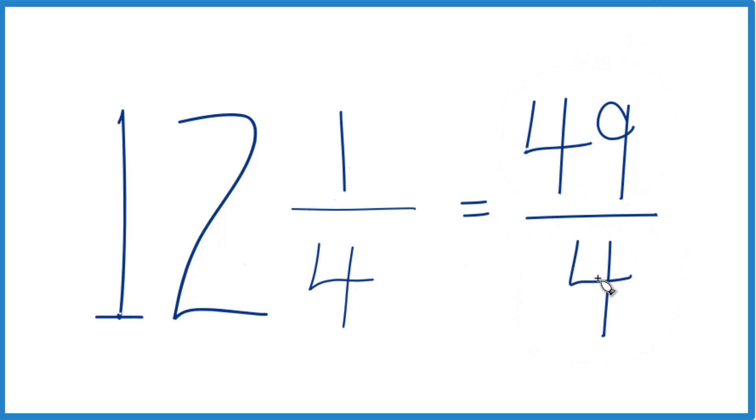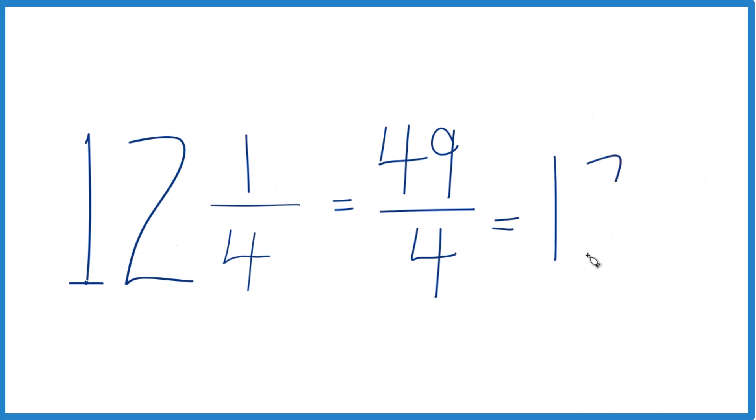You can even check your work here because 4 goes into 49 twelve times. 12 times 4 is 48. We'd have 1 left over. Bring our 4 across, and we get the same mixed number as we had before, 12 and 1/4.